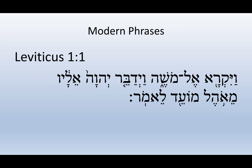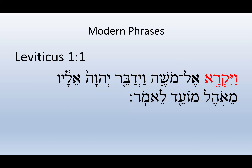Leviticus — Vayikra — means 'and he called.' And he called to Moses. The verb then subject order is pretty typical in Hebrew. Who said it? It was Yahweh who said it. 'And he spoke — Yahweh spoke to him from the tent of meeting to say,' and the next verse goes on to what he said. For the book of Leviticus, they used the first word, Vayikra — 'and he called.' That's the name of the book in Hebrew.